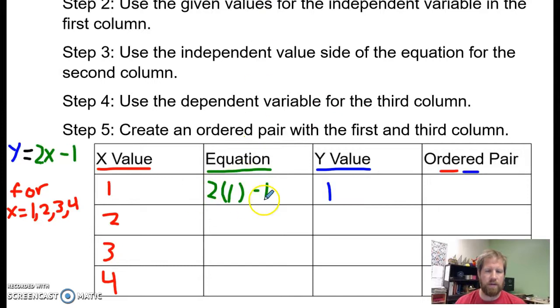Now I'm going to go down to my next value. I've got two times two minus one. Two times two is four minus one. So my y value is going to be three. And so when my x is two, my y is three.